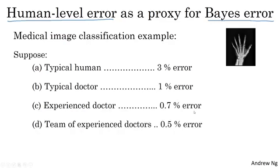And a team of experienced doctors - if you get a team of experienced doctors and have them all look at the image and discuss and debate the image together, their consensus opinion achieves 0.5% error. So the question I want to pose to you is, how should you define human-level error? Is it 3%, 1%, 0.7%, or 0.5%?